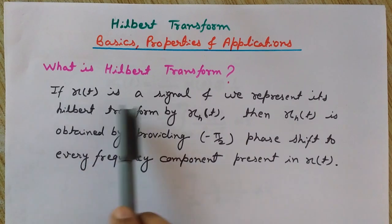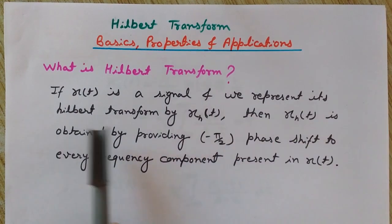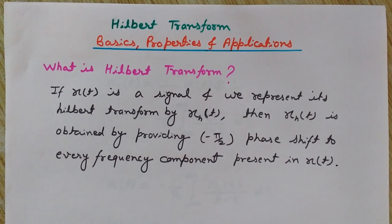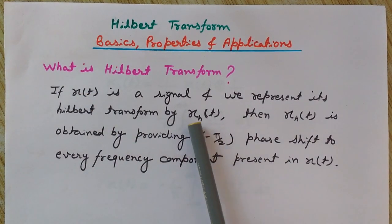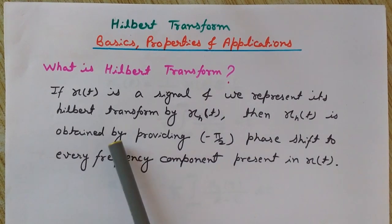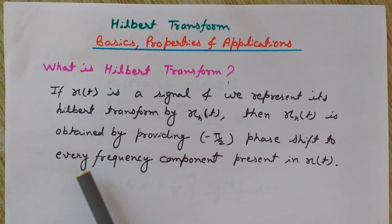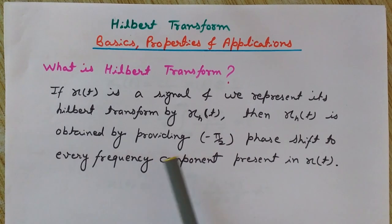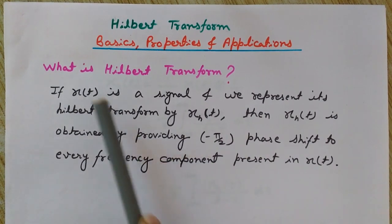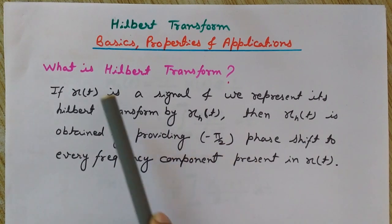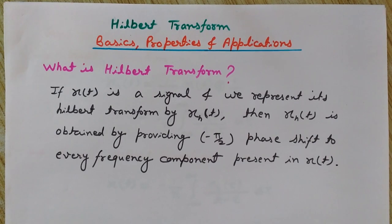If x(t) is a signal, we represent its Hilbert Transform by x̂(t), where H stands for the Hilbert Transform. Then x̂(t) is obtained by providing a minus π/2 phase shift to every frequency component present in x(t). Since we may have many frequencies in this signal, if we phase shift every frequency component by minus π/2, we get the Hilbert Transform of x(t). This is the basic definition of Hilbert Transform.